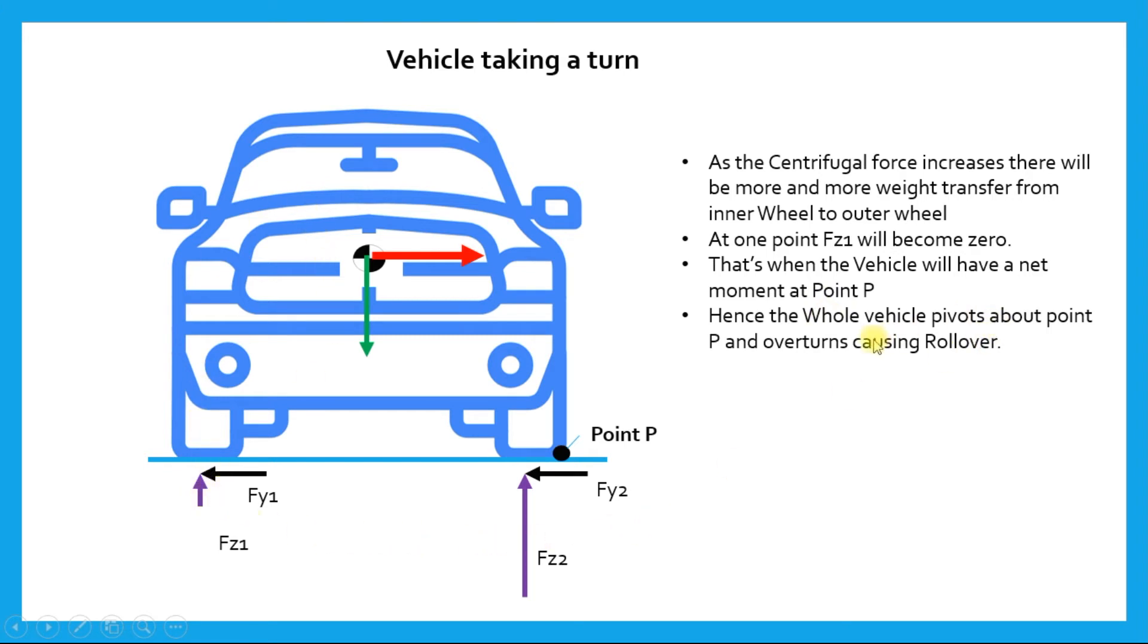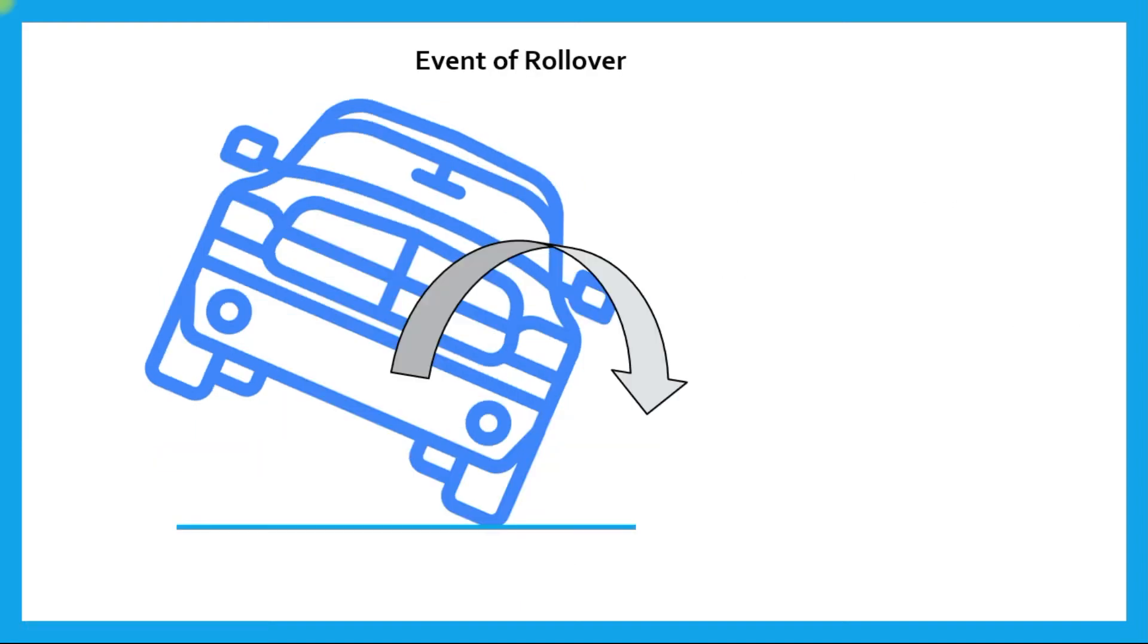Hence, the whole vehicle pivots about point P due to the action of the centrifugal force. So this is the cause of the vehicle rollover. As the vehicle rolls over, it goes into an uncontrolled motion and of course the accident happens.